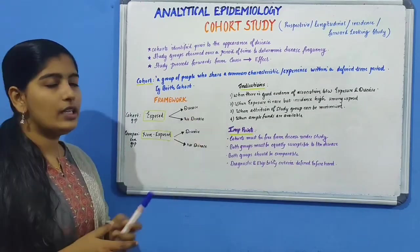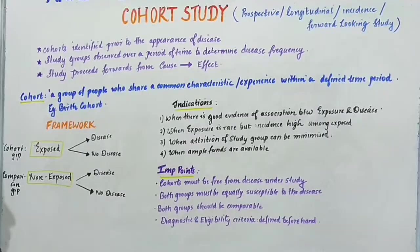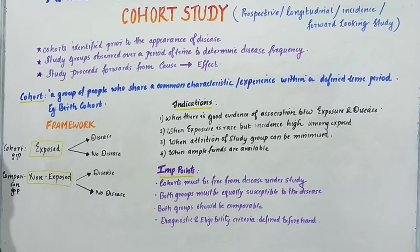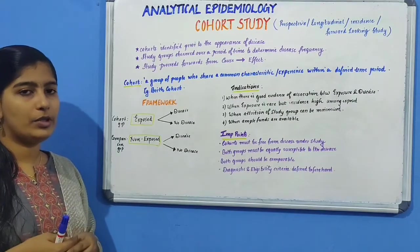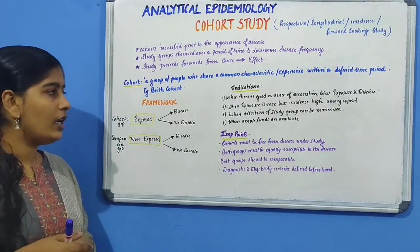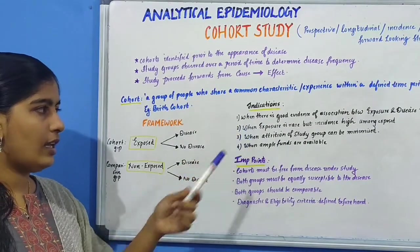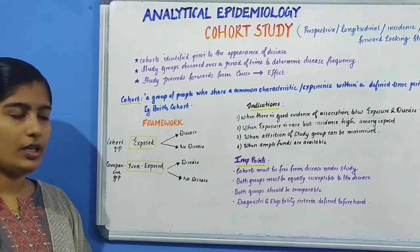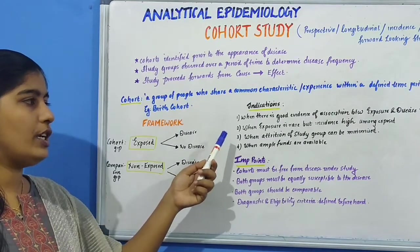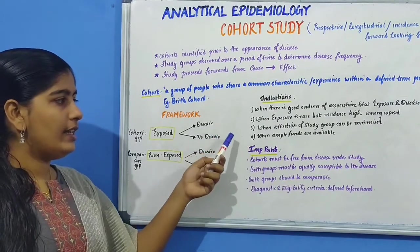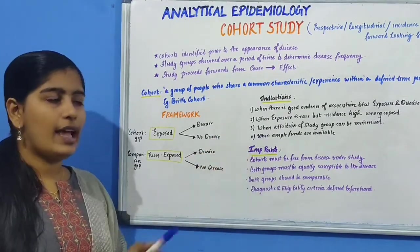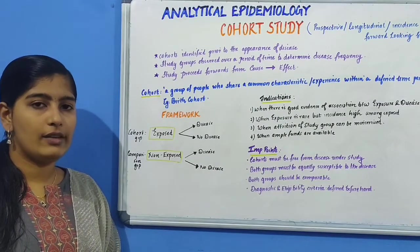Moving on to the indications — when is cohort study indicated? First, when there is good evidence of association between the exposure and the disease, either through clinical observations, case-control studies, or descriptive epidemiologic studies. It is indicated when exposure is rare but incidence is very high among the exposed. Also, when attrition or loss to follow-up can be minimized, and finally when ample funds are available, as cohort studies are very expensive.